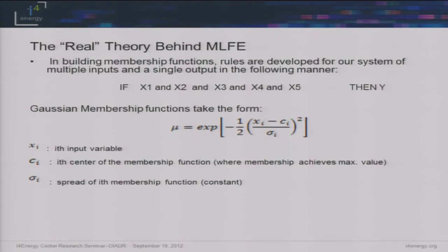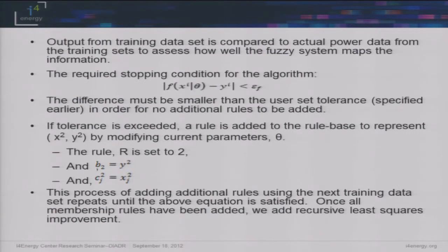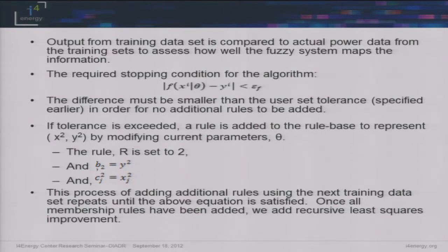We take these five inputs and build membership functions in the form of a Gaussian distribution — Gaussian functions are pretty common so we decided to go with that. The basic thought process is we start with one rule, set a user tolerance epsilon F, and we have a stopping condition. We pull the first set of data, the first actual output Y sub i, and calculate F. If it's greater than that tolerance, we step forward and build another rule. This continues to repeat until the condition is met. Then at the end, we add a recursive least squares improvement.